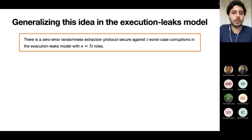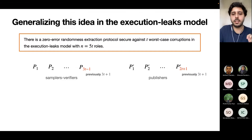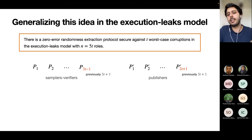In the execution leaks model, we divide parties into samplers/verifiers and publishers with different sizes. Now we have 3T-1 samplers/verifiers instead of 3T+1, and 2T+1 publishers instead of 3T+1. The reduction in publishers is possible because we moved from sending leaks to execution leaks.